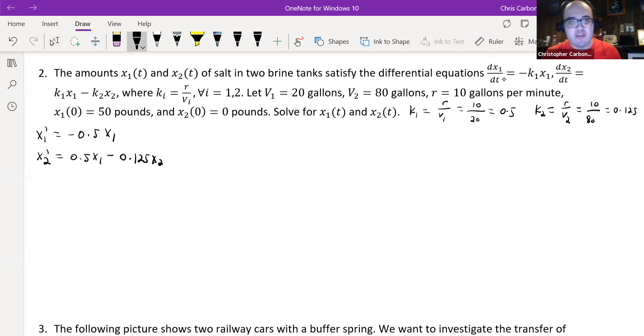So as a system of matrices and vectors, this can be rewritten as, this would be negative 0.5, down here is just 0.5, up here is 0, and over here is negative 0.125 times our vector x is equal to the solutions of 50 and 0.